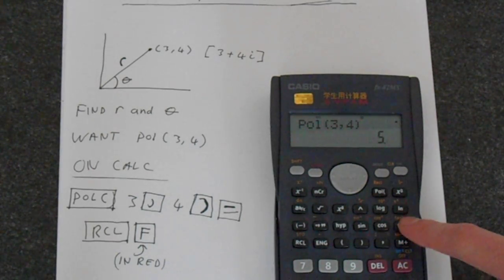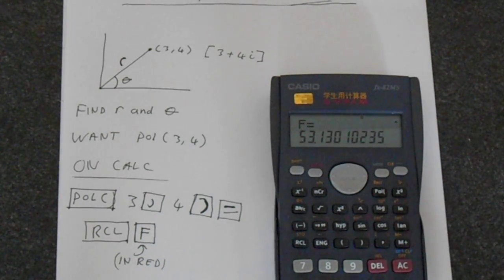That gives us 53.1 degrees. And so that's how we convert from rectangular to polar.